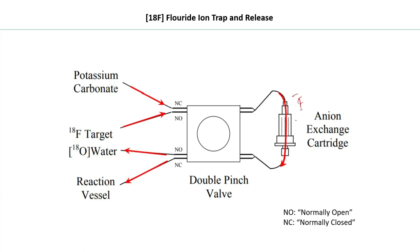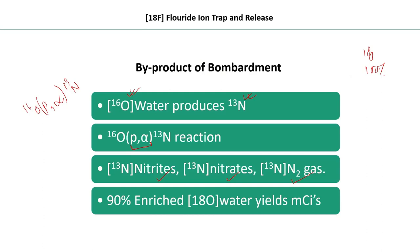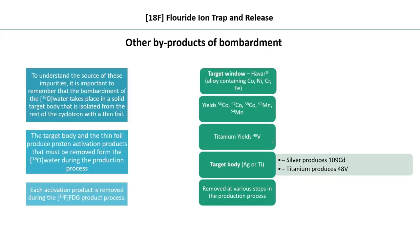The N-13 nitrites and nitrates, like fluoride ions, also bind to the ion exchange cartridge when the solution is passed through. However, this binding is irreversible. When potassium carbonate solution is passed through to release F-18 fluoride ion, the nitrites and nitrates remain permanently bound to the cartridge. This is how N-13 byproducts are separated and removed via the ion exchange column itself.